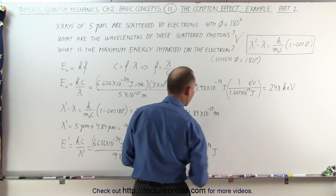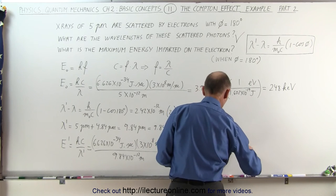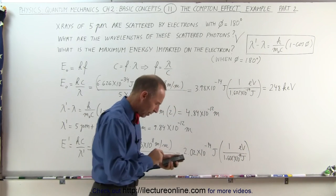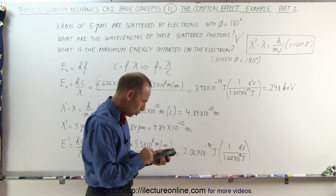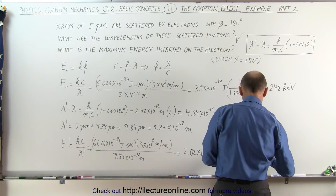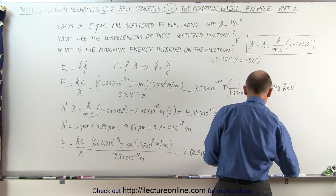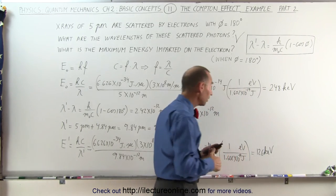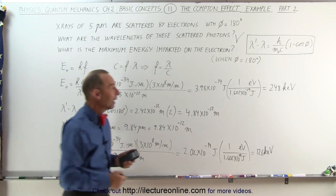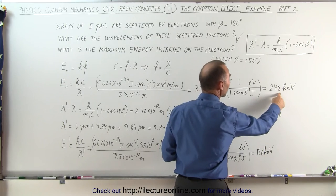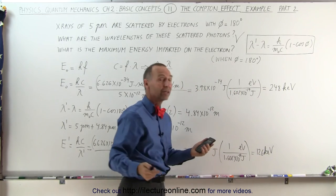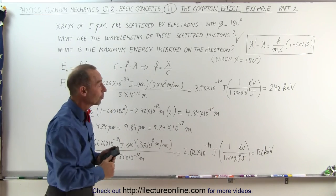Again converting that to electron volts, so divide by 1.602E-19, and we have about 126 kilo electron volts. So what this means is that the incoming photons before they were scattered had energies of 248 kilo electron volts, and the scattered photons had energies of 126 kilo electron volts.